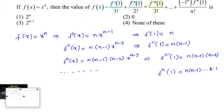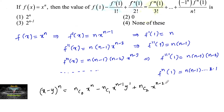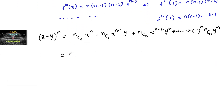Now let us expand using the binomial theorem: (x - y)ⁿ = C(n,0)xⁿ - C(n,1)xⁿ⁻¹y + C(n,2)xⁿ⁻²y² - ... + (-1)ⁿ C(n,n) yⁿ.